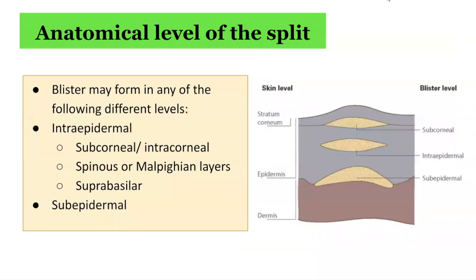We'll start off with a recap of the anatomical level of split that we need to understand when considering autoimmune blistering disorders. The blister may form in any one of the following different levels, including intraepidermal split and subepidermal split.